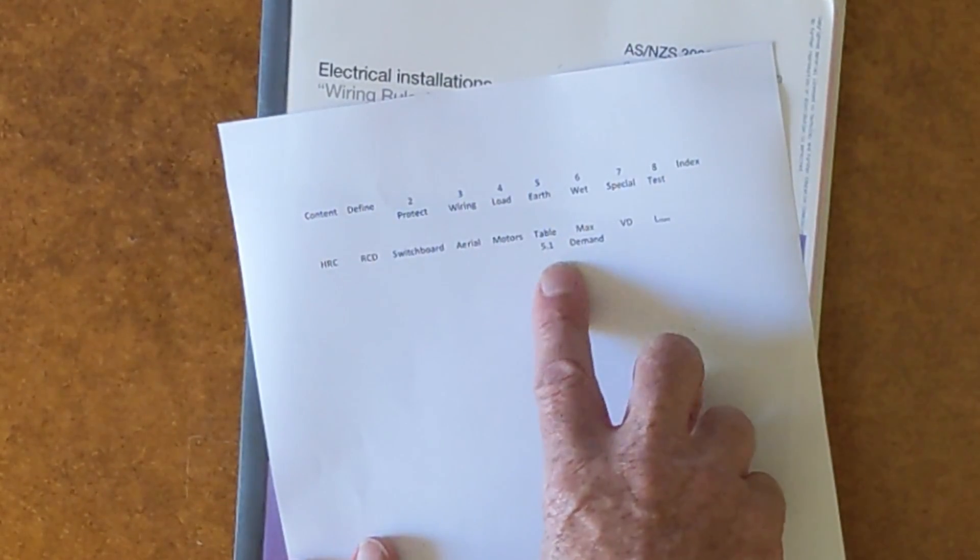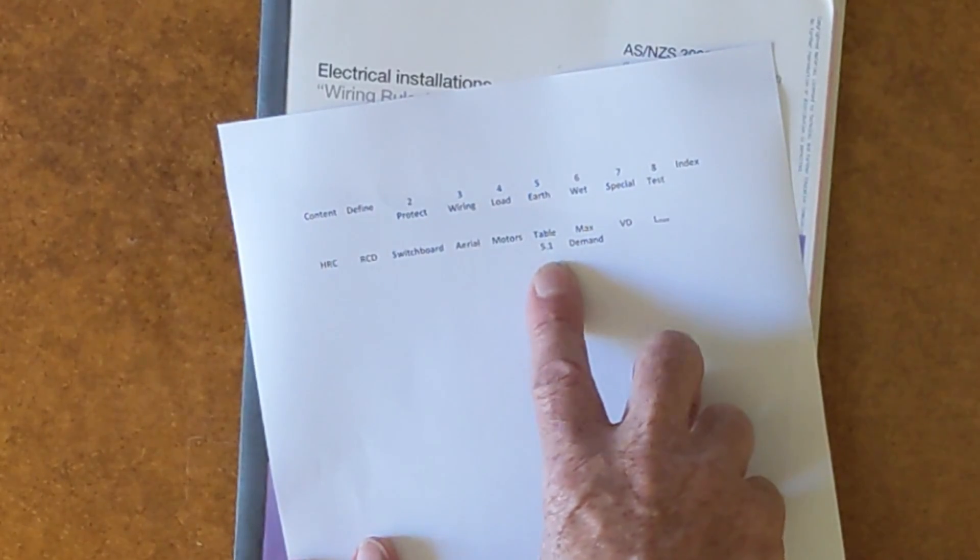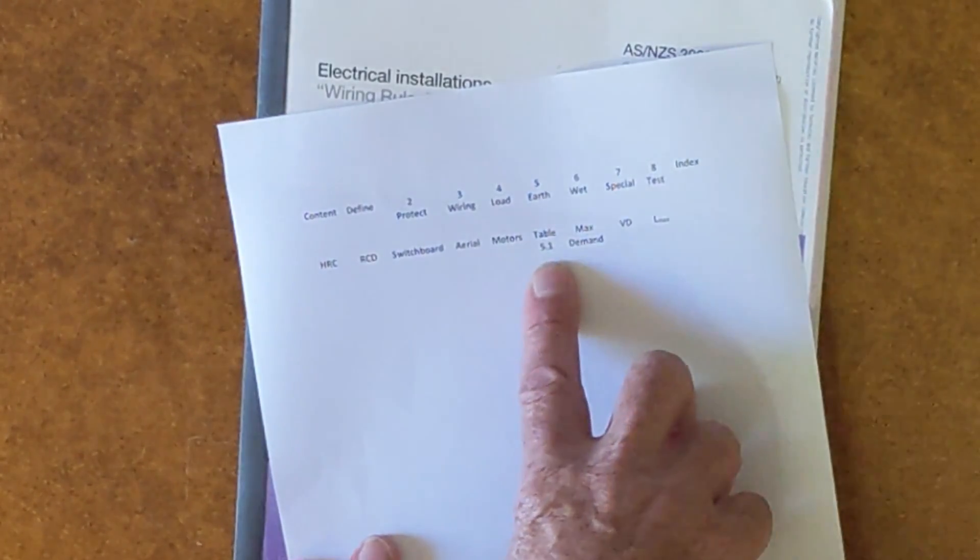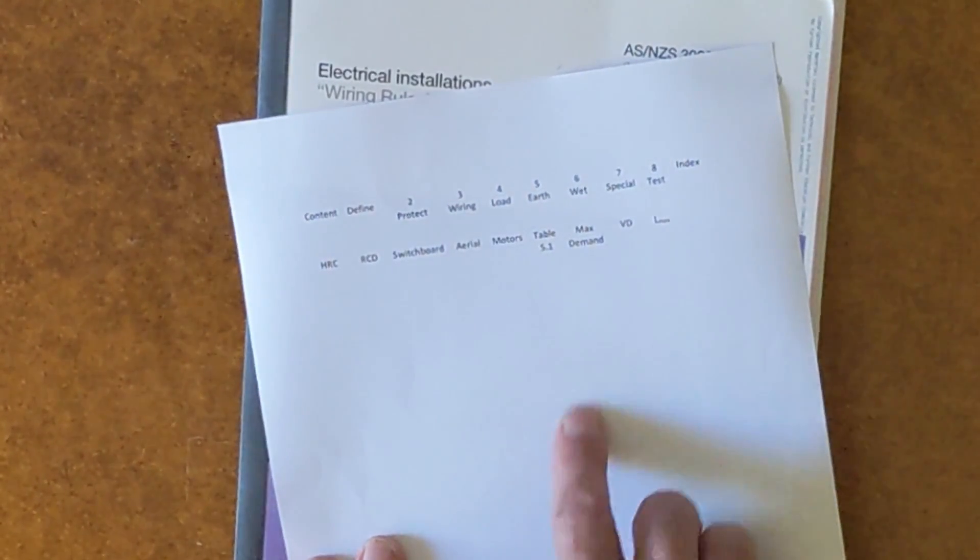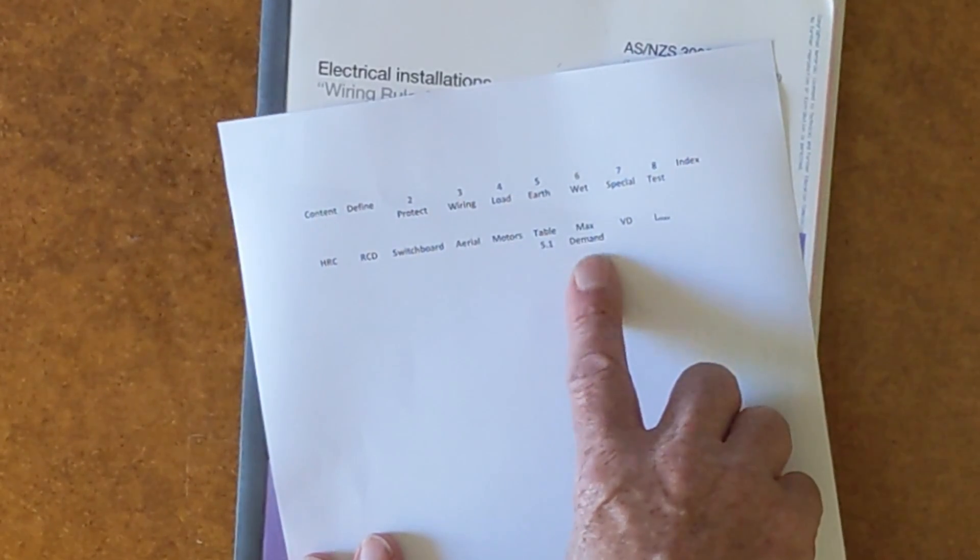Motors. Motors are a special kind of load and they always have attention in an exam. So I've listed those. Table 5.1 in earthing. I know that I'm going to be asked a question on earthing sizes. I want to be able to get there quickly. I know that I'm going to be asked a question on maximum demand. I'm only going to tag table C1 because I know that table C2 is straight after it.